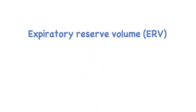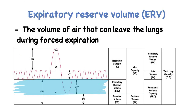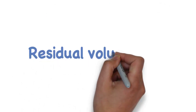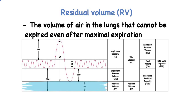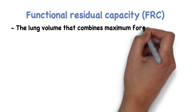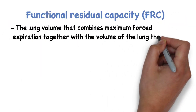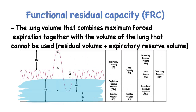The expiratory reserve volume is the volume of air that can leave the lungs during forced expiration. The residual volume is the volume of air in the lungs that cannot be expired even after maximum expiration. The functional residual capacity combines maximum forced expiration together with the volume of the lungs that cannot be used — in other words, it's the residual volume plus the expiratory reserve volume.